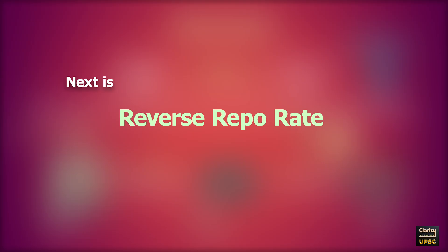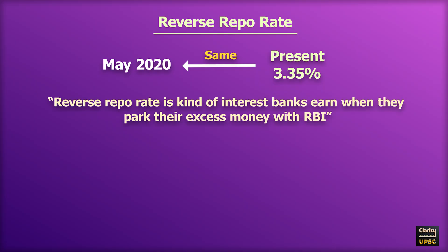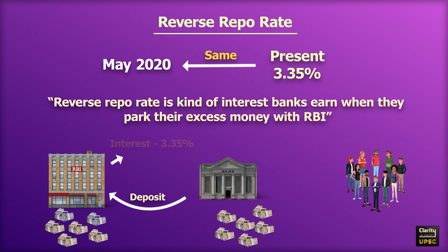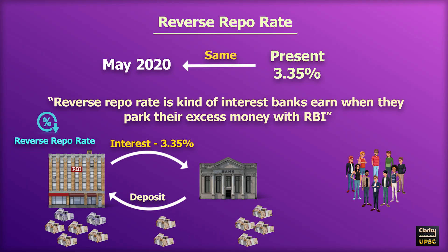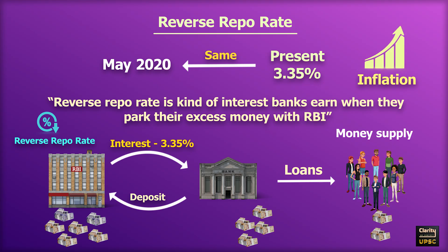Next is reverse repo rate. It is 3.35% at present. It has been the same since May 2020 — no changes since then. Reverse repo rate is the interest banks earn when they park their excess money with RBI. If they deposit extra money with RBI, they earn 3.35% interest. If the reverse repo rate is reduced, banks don't prefer to park excess money with RBI; instead, they give it to people as loans, increasing money supply, inflation, and boosting growth.